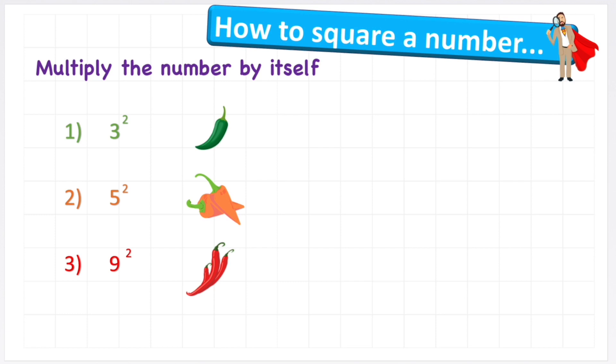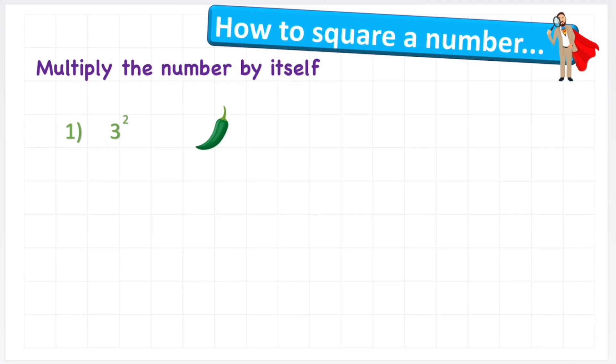Okay, the first thing we need to understand is that squaring a number is essentially just multiplying the number by itself. So let's have a look at this question here. We have 3 squared, which is asking me to multiply this number by itself.